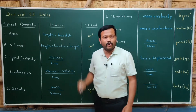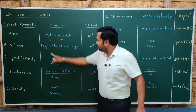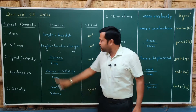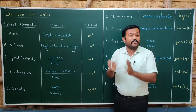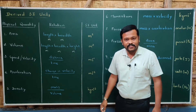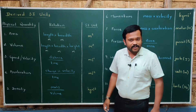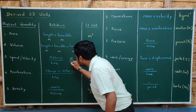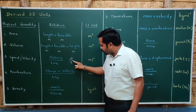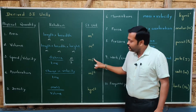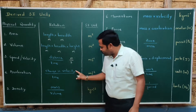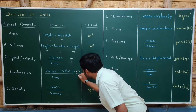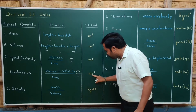Volume is calculated by multiplying length × breadth × height. The unit of each dimension is meter, so the SI unit of volume is cubic meter (m³). Speed or velocity is calculated by the ratio of distance to time. The unit of distance is meter and the unit of time is second, so the SI unit of speed or velocity is meter per second (m/s). Acceleration is calculated by the ratio of change in velocity to time taken, so the SI unit of acceleration is meter per second squared (m/s²).